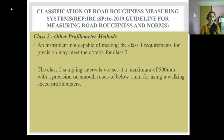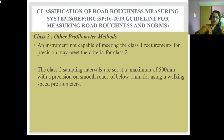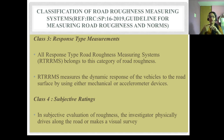Class 2 covers other profilometer methods — an instrument not capable of meeting Class 1 precision requirements. Class 2 sampling intervals are set at a maximum of 500 mm with a precision on smooth roads of below 1 mm using walking speed profilometers. Class 3 is response type measurements: all RT-RRMS belong to this category. RT-RRMS measures the dynamic response of vehicles to the road surface using either mechanical or accelerometer devices.